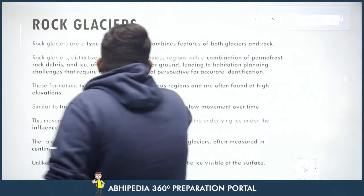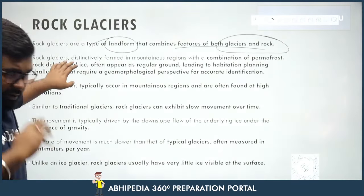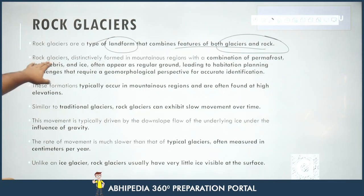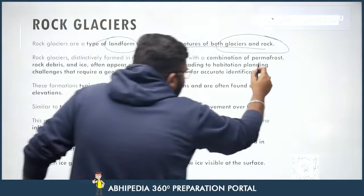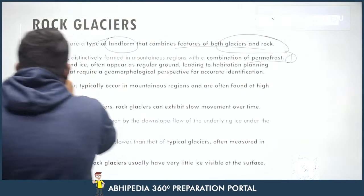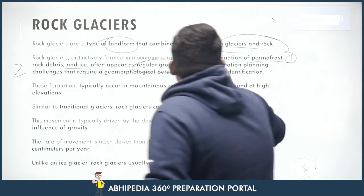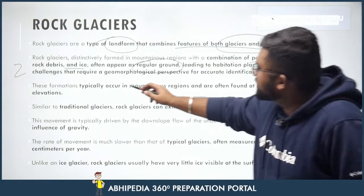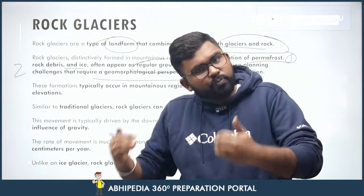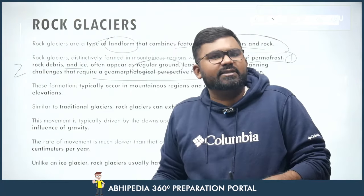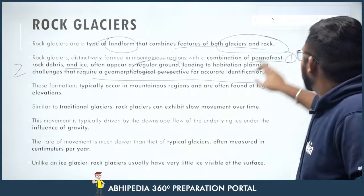Rock glaciers are a type of landform that combines features of both glaciers and rocks. They are distinctively formed in mountain regions with a combination of permafrost, rock debris, and ice. They often appear as regular ground, leading to habitation planning challenges that require a geomorphological perspective for accurate identification.